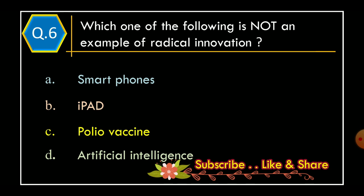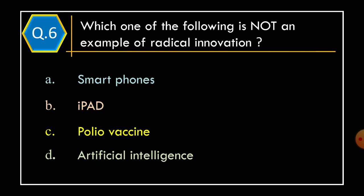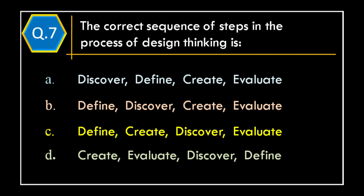Question 6: Which one of the following is not an example of radical innovation? Option A: Smartphone; Option B: iPad; Option C: Polio vaccine; Option D: Artificial intelligence. The correct option is Option C, Polio vaccine.